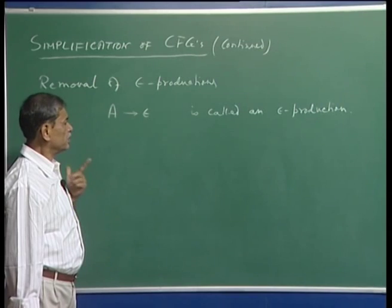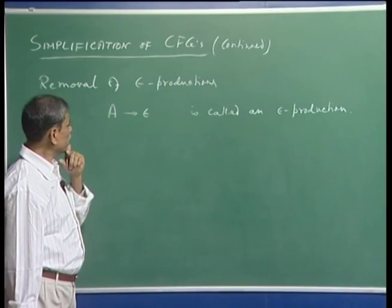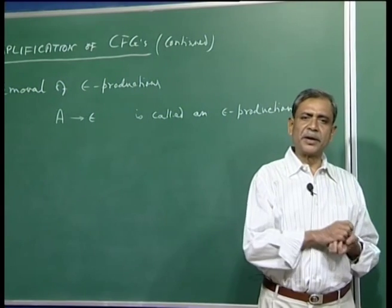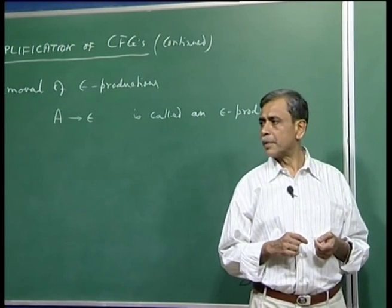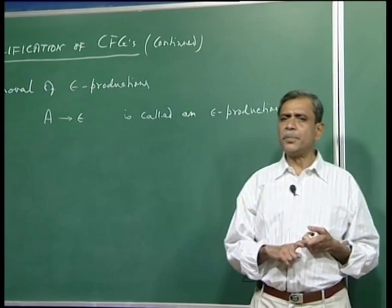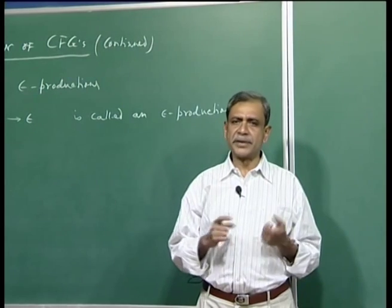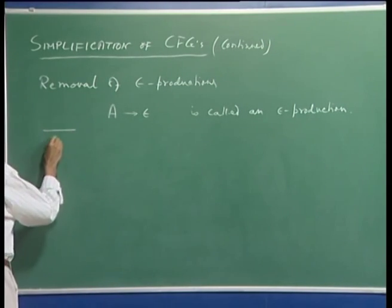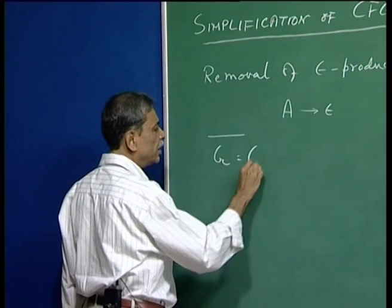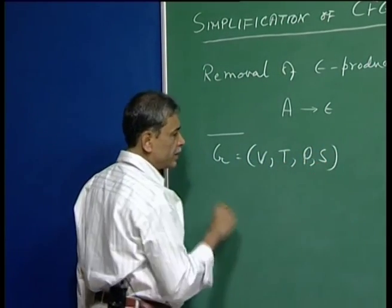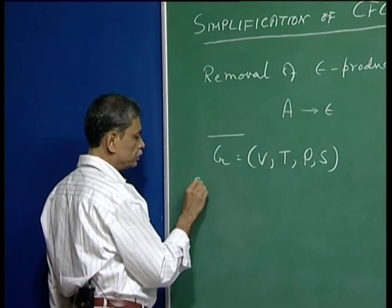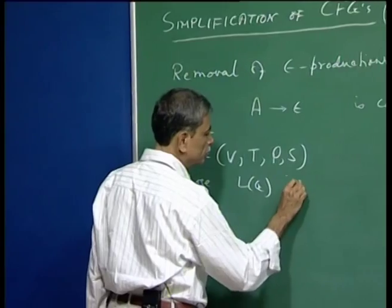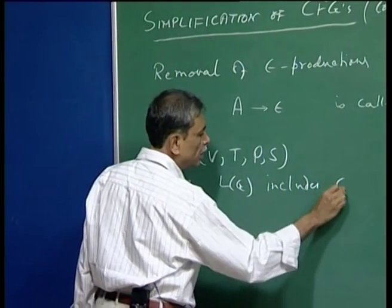In general, there can be many epsilon productions in a grammar and we would like to eliminate all such productions to form a new grammar G1. Suppose the old grammar G — say G = (V, T, P, S) — generated the string epsilon itself.